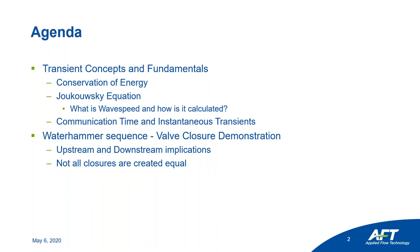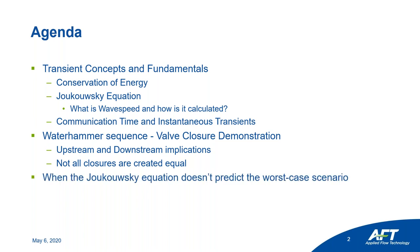We'll look at how our valve closure technique impacts whether we see a significant surge or not — how we close it, the valves themselves, and the overall system approach. Following that, we'll take a look at when the Joukowsky equation doesn't predict the worst case scenario. There are areas where AFT Impulse may indicate the pressure surge will actually be worse than anticipated. Since this is an introduction, I'll also provide some educational resources so you can dive into more complex topics like surge accumulators and valve characteristics.